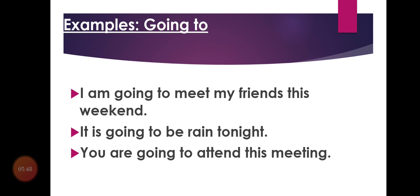One important rule: whenever you use 'to,' you will always use the verb first form after it. More going to examples: 'It is going to rain tonight' — this is my opinion; I am not seeing the weather but it seems like it might rain, so it is not confirmed. 'You are going to attend this meeting' — I am saying this to someone but I am not sure whether they will attend or not. We use going to when plans or actions are not confirmed.